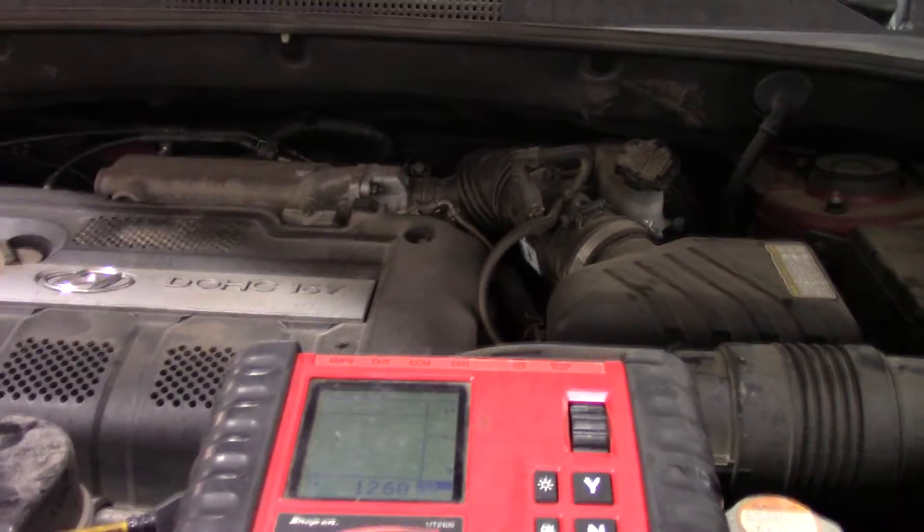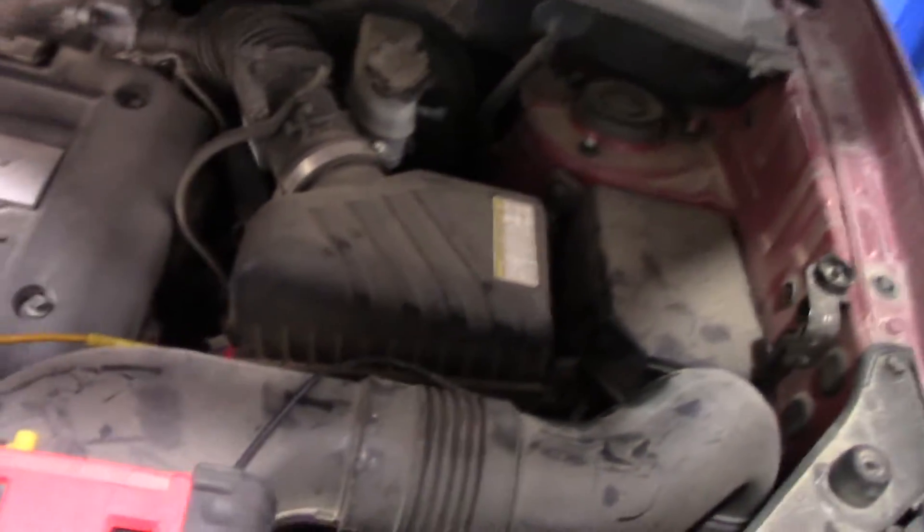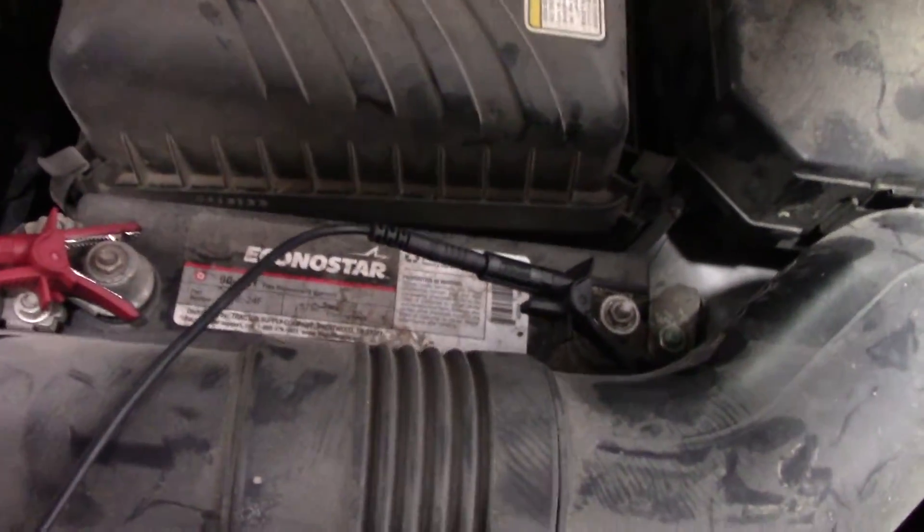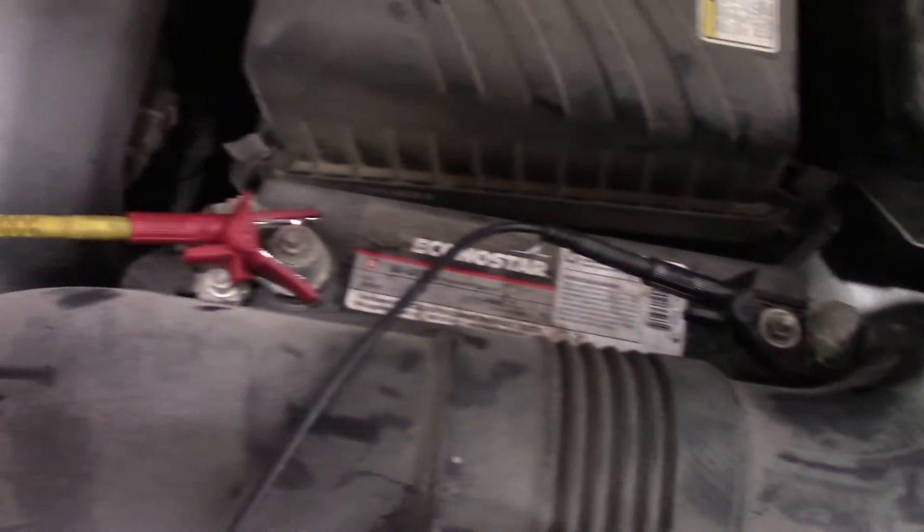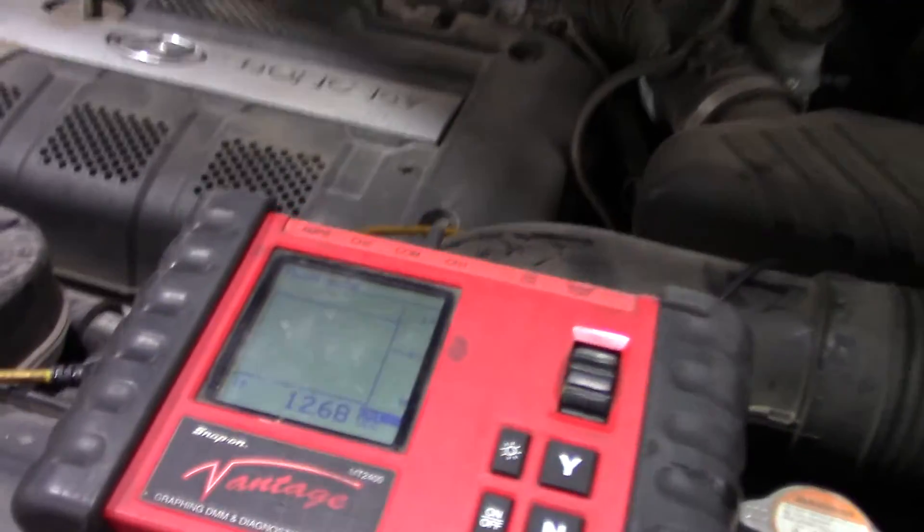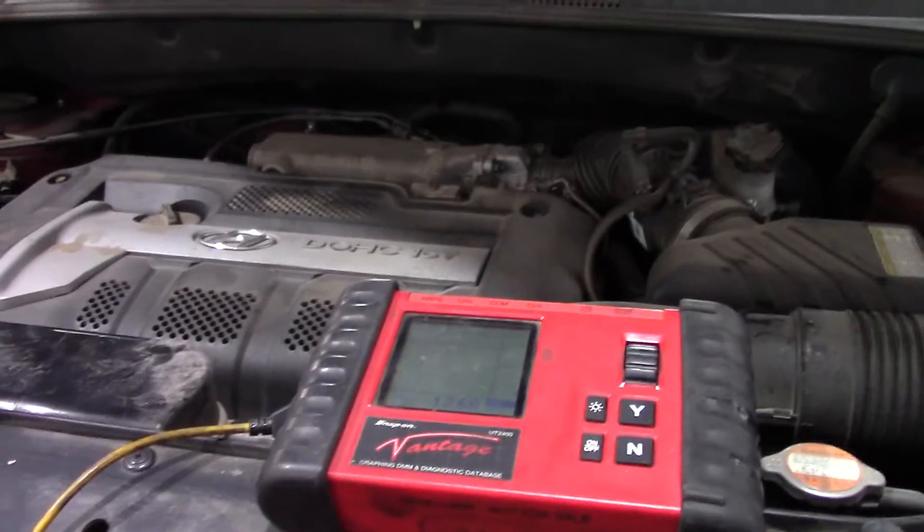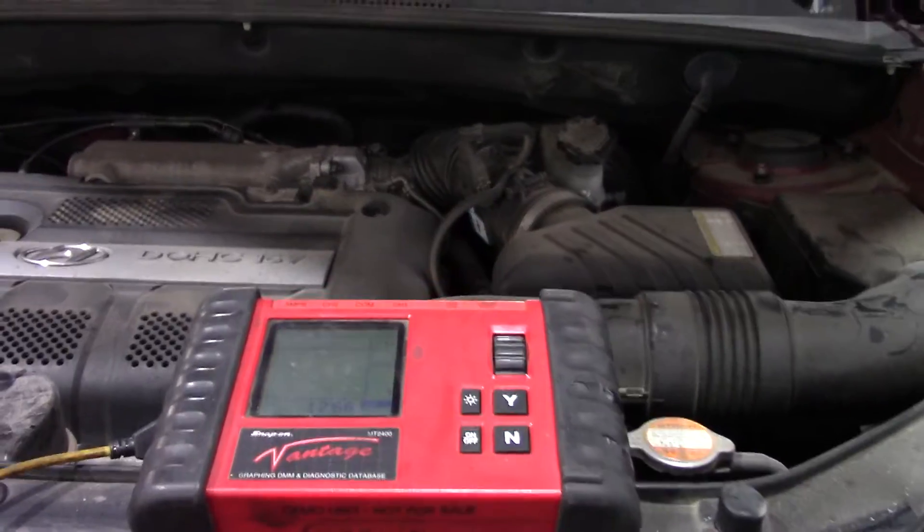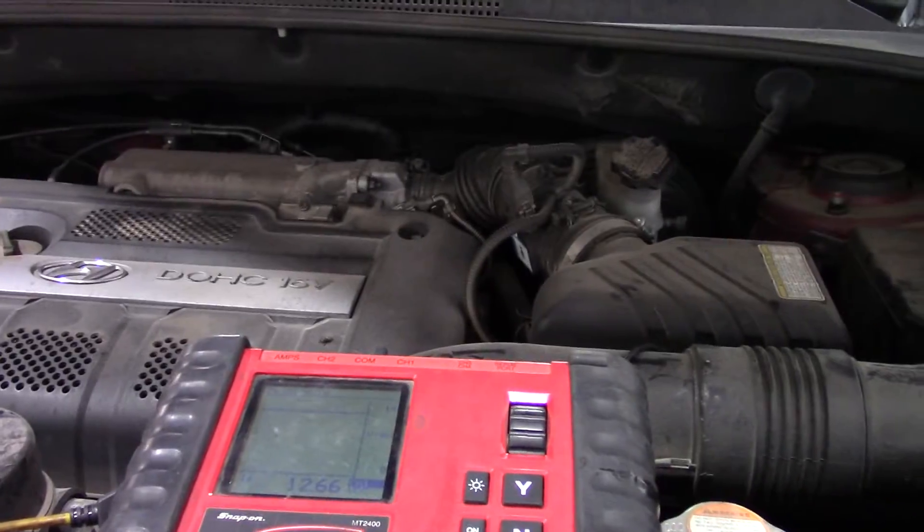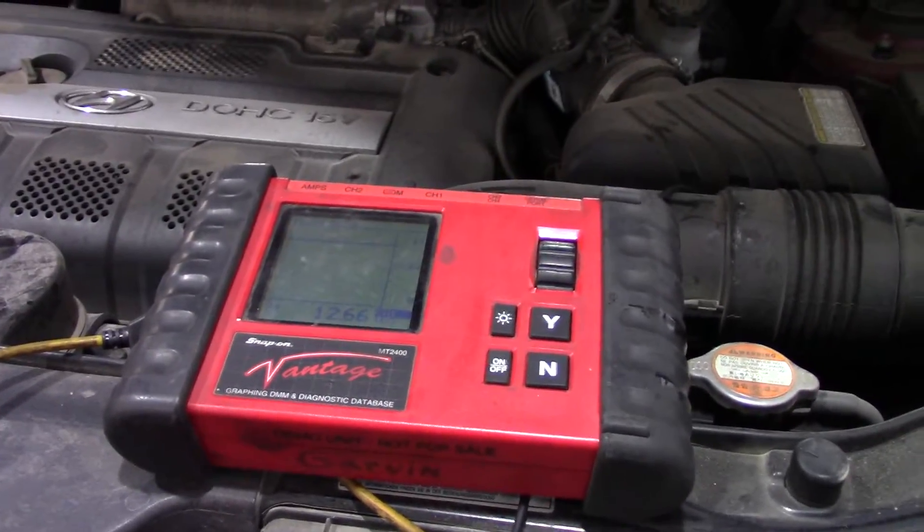...is hook up to see what your battery voltage is while the engine is running. We got the meter hooked up, negative to negative, positive to positive. You can see our battery voltage right now is sitting at 12.68. We just had it charging. We'll fire it up and see what our battery voltage does.